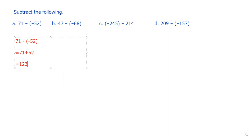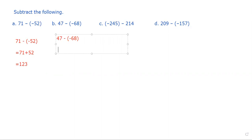Now let's see another example: 47 minus negative 68. We write the question: 47 minus negative 68. When we remove the bracket around negative 68, the two negative signs turn into a positive sign — negative negative equals positive — so we get 47 plus 68. Adding them simply gives us the answer 115.